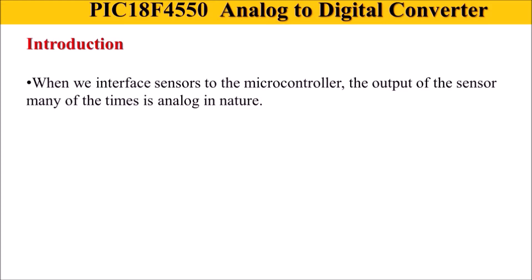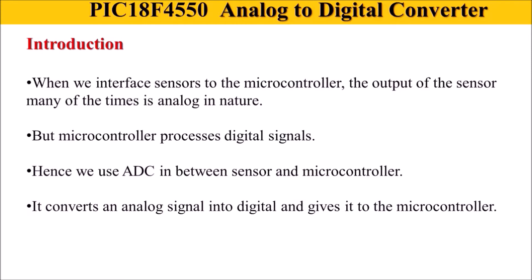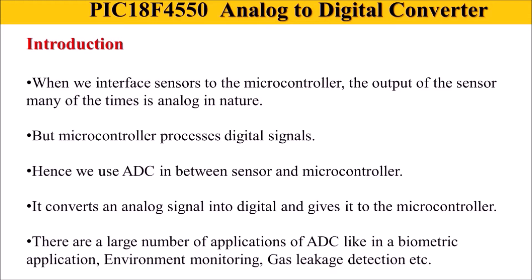An analog to digital converter is used in microcontrollers to interface sensors. Most sensor outputs are analog, and when we want to interface sensors to a microcontroller, we have to convert this analog input into digital, which is then given to the microcontroller. The PIC 18F IC has an internal A2D converter, so we can directly connect an analog signal to the internal ADC, which converts it to digital for the microcontroller to process.